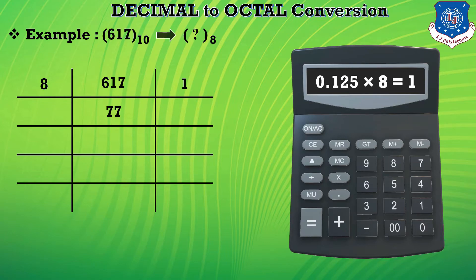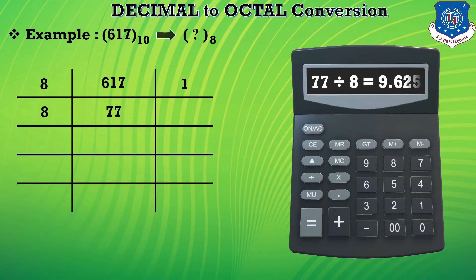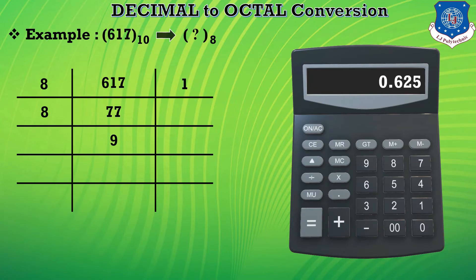In the next step, 77 is divided by 8 and we get the answer 9.625. Here 9 becomes the quotient and the remaining term 0.625 is multiplied by 8 to give us 5 as the remainder.